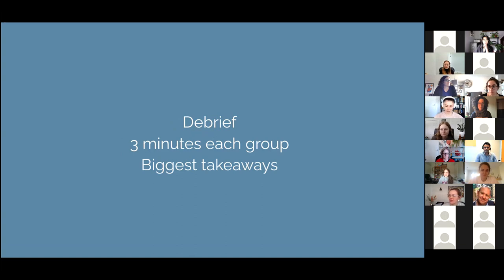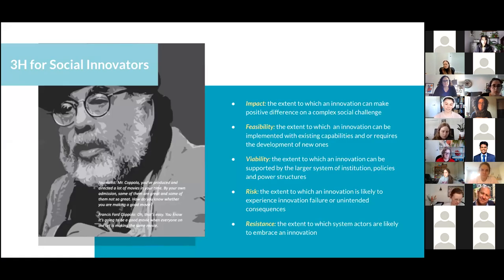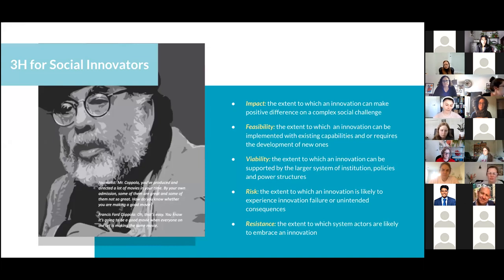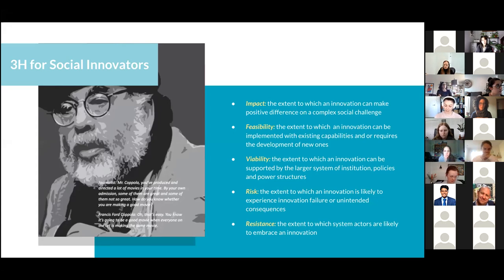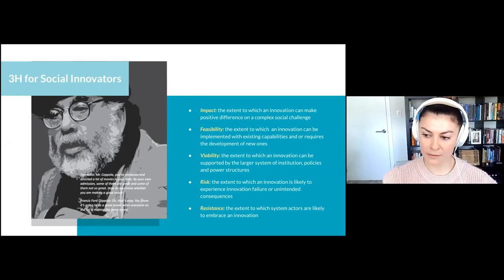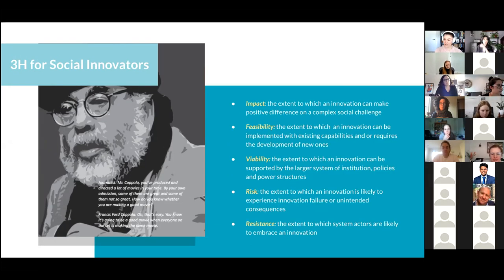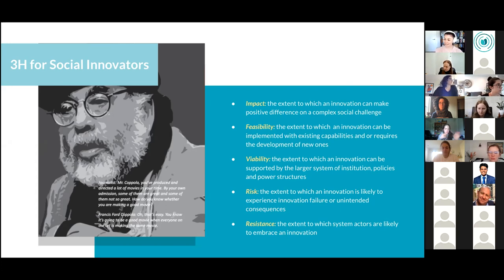Now that we have a sense of the model and what can distinguish incremental change from potentially transformative change, the question is: where does Nourish want to focus its time and effort? Social innovators need to focus on at least five dimensions of potential when thinking about a good action or innovation. First, potential for impact — the extent to which an innovation can make a positive difference on a complex social challenge. Second, feasibility — the extent to which an innovation can be implemented with existing capabilities, or do we require new ones? Third, viability — the extent to which an innovation can be supported by the larger system of institutions, policies, and power structures. Fourth, risk — the extent to which an innovation is likely to experience failure or unintended consequences. And fifth, resistance — the extent to which bigger system factors are potentially rejected.